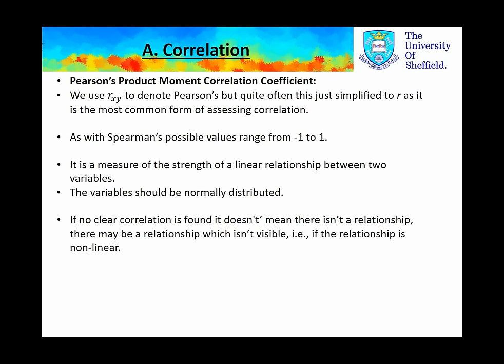The other technique we use is Pearson's Product Moment Correlation Coefficient, often referred to simply as R. As with Spearman's, the possible values range from minus 1 to 1. It is a measure of the strength of a linear relationship between two variables, and the variables should be normally distributed to use. If no clear correlation is found, that doesn't mean there isn't a relationship — there may be a relationship which isn't visible, i.e. if the relationship is non-linear. Thank you for listening to this summary; you can now continue with the practical.